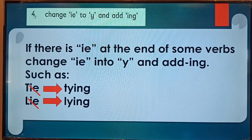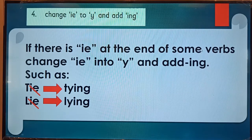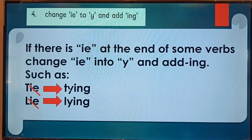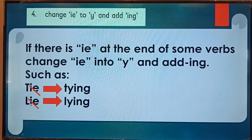Look at rule number four: change ie to y and add ing. If there is ie at the end of some verbs, change ie into y — this is very simple — and add ing. Look at the examples. Tie: you will change ie into y and add ing — tying. Lie: you will change ie into y and add ing — lying.